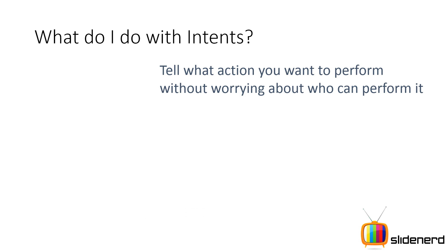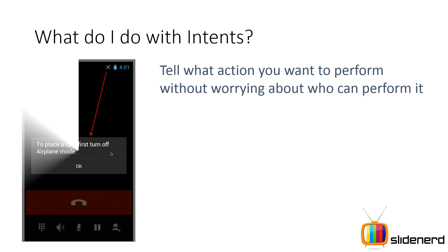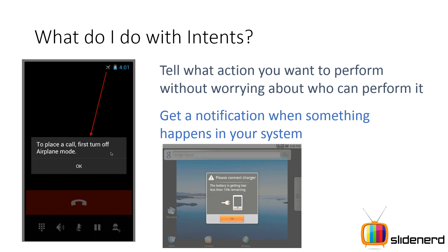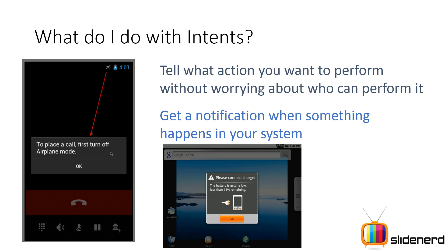That's what implicit intents is all about. In implicit intents, you can tell what action you want to perform without worrying about who can perform it. You also get notifications — for example, your airplane mode was turned off or your battery level went below a certain level. Whenever there is an event, an intent is created out of that event and supplied to everybody. If you have a broadcast receiver that's actively listening to these events, that broadcast receiver is going to be connected. There are hundreds or thousands of events in an Android device — battery going low, Bluetooth turned on, network unavailable, airplane mode on — and each event is converted into an intent object and broadcasted to everybody in the system. That's how the Android operating system works with events.